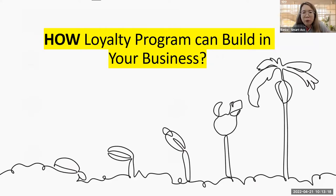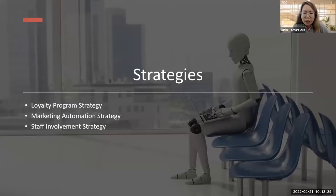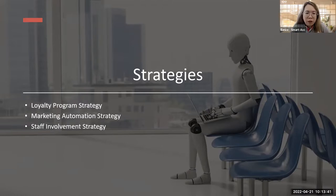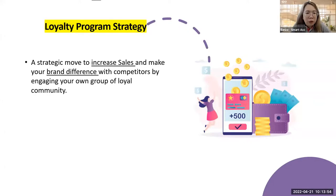Now, how can a loyalty program be built in our business? There are strategies we can apply, grouped into three areas: how to strategize your loyalty program, marketing automation (which works hand-in-hand with the loyalty program), and making everyone involved — including your staff. A loyalty program is a strategic move to increase sales and differentiate your brand from competitors by engaging your own group of loyal community.